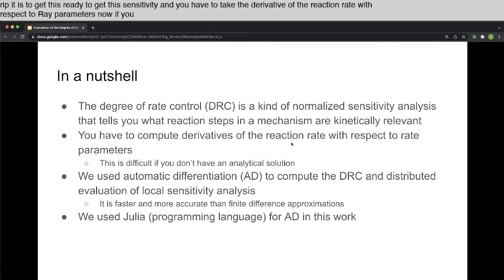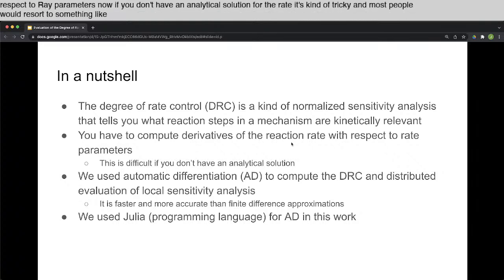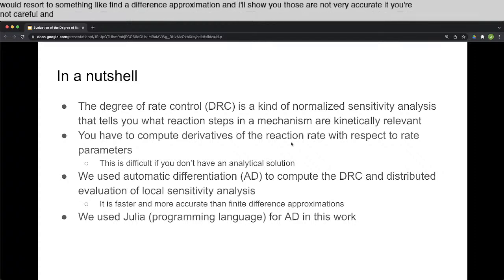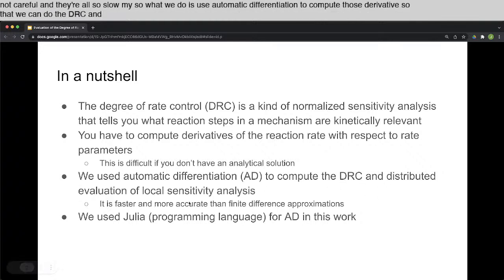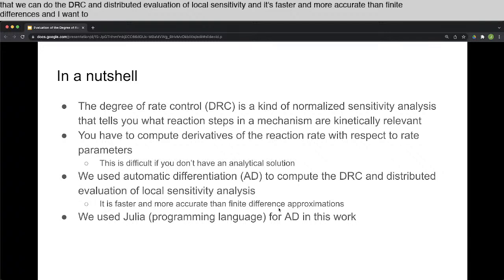Now, if you don't have an analytical solution for the rate, it's kind of tricky, and most people would resort to something like finite difference approximations. And I'll show you those are not very accurate if you're not careful, and they're also slow. So what we do is use automatic differentiation to compute those derivatives so that we can do the DRC and distributed evaluation of local sensitivity. It's faster and more accurate than finite differences, and once you know how to do it, it's actually easier.